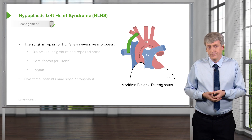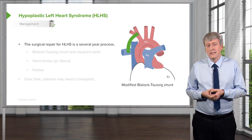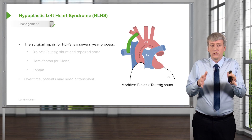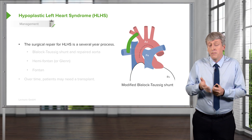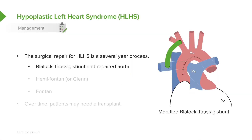The surgical repair is a three-stage repair occurring over the first several years of life, similar to the repair for tricuspid atresia. Immediately at birth is the first stage: a Blalock-Taussig shunt — shown on the slide in green — is a connection between the pulmonary artery and the aorta, essentially creating a permanent patent ductus arteriosus that allows systemic blood flow off the pulmonary artery. They will also often do an atrial septostomy, literally creating a hole in the septum between the two atria to allow for further mixing. This happens within a day or two of birth.